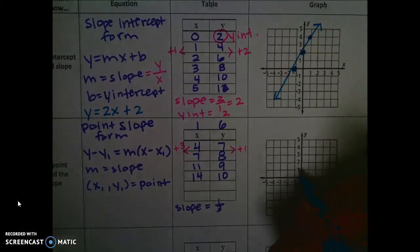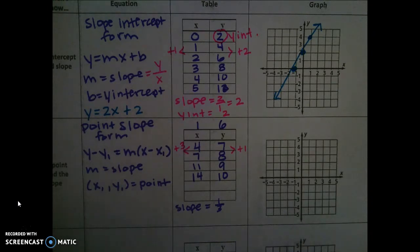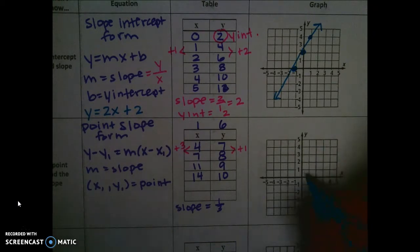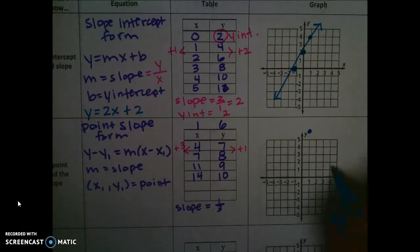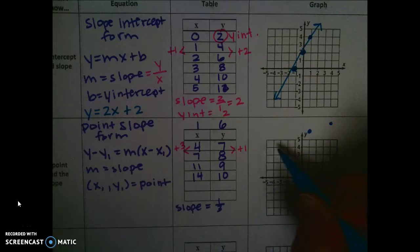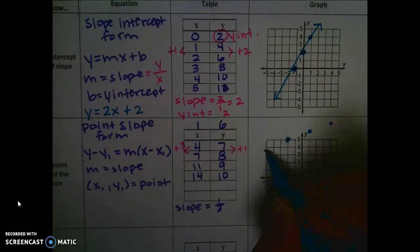So my first point is 1. Okay, this isn't going to fit on the graph, but that's okay. So I would go over to 1 and up to 6, and then over to 4 and up to 7. So my graph is going to look something like this. I could go back and find the point that came before this first one. So if I go down 1 and back 3, my other point would be right here. So this is a little bit off the graph. Sorry about that.